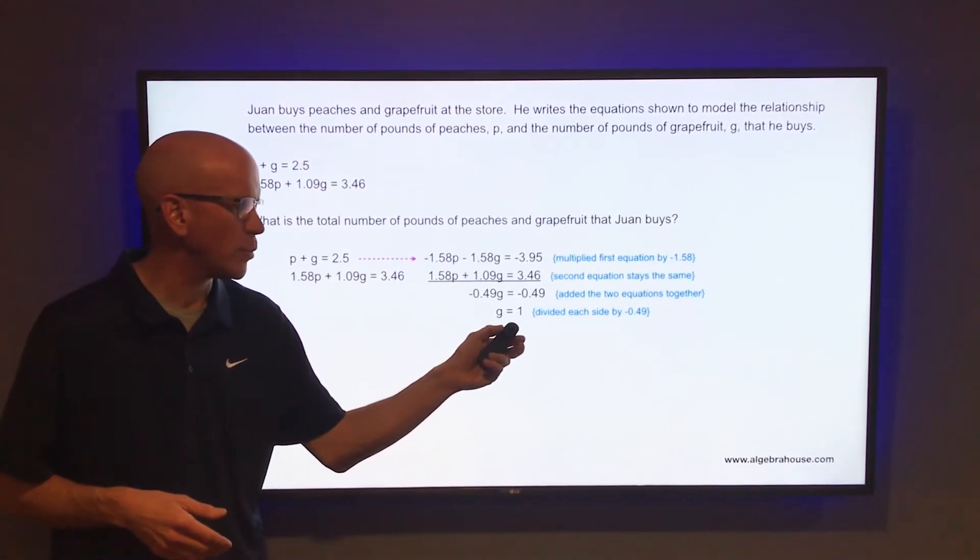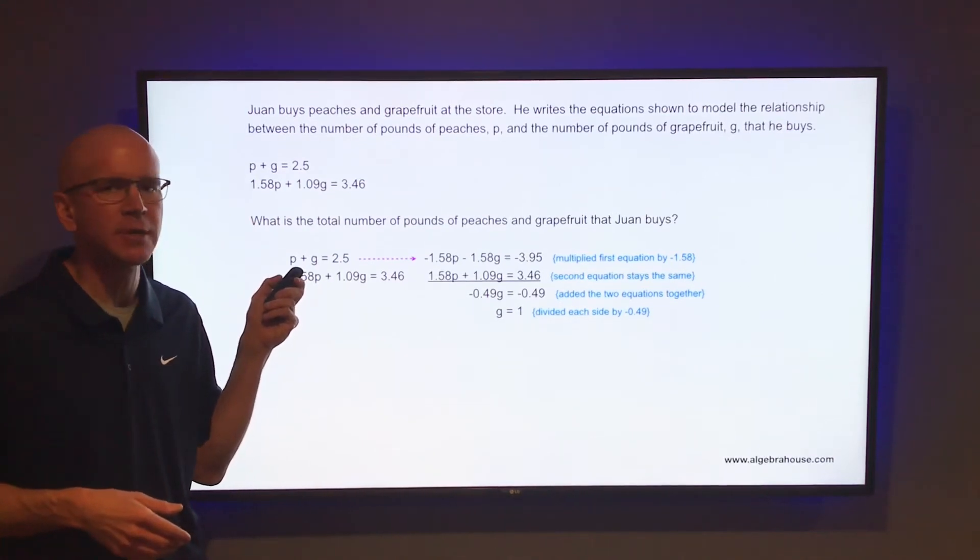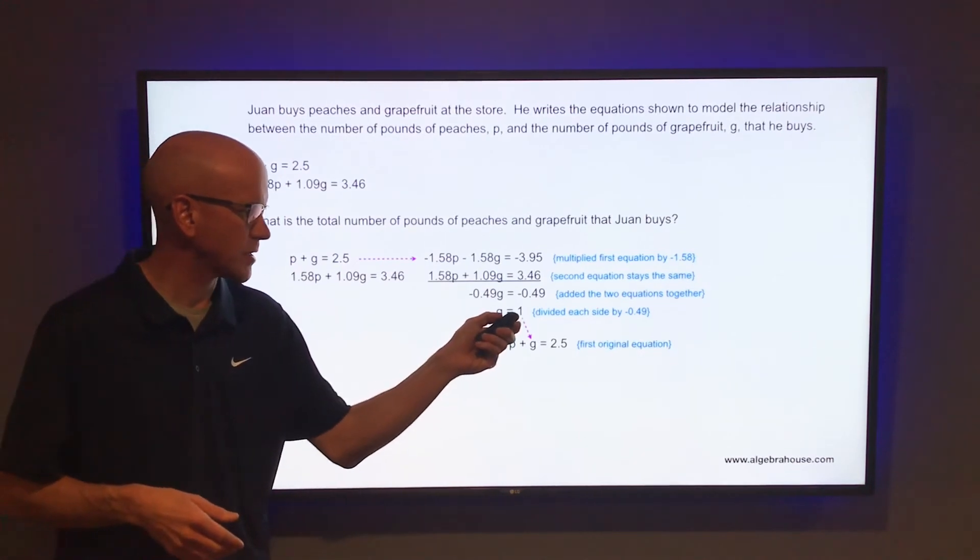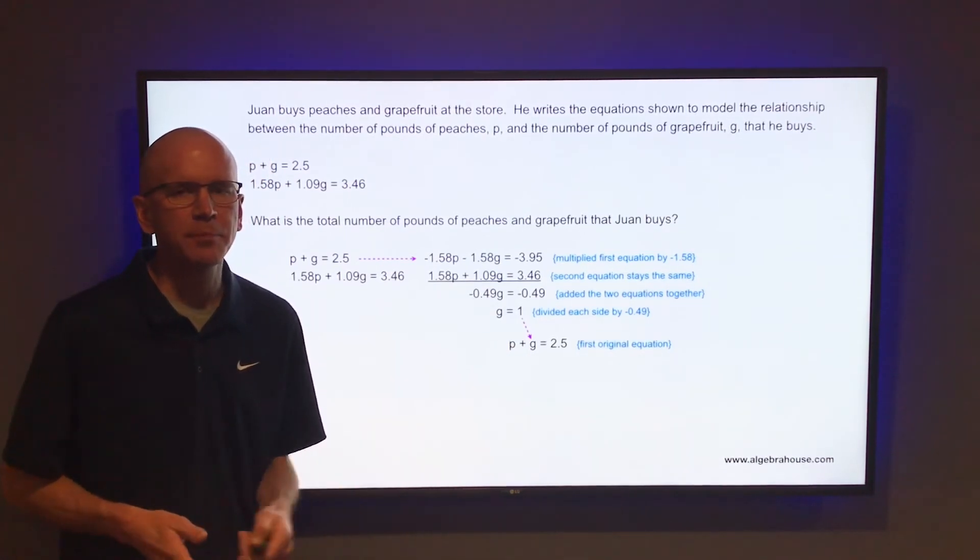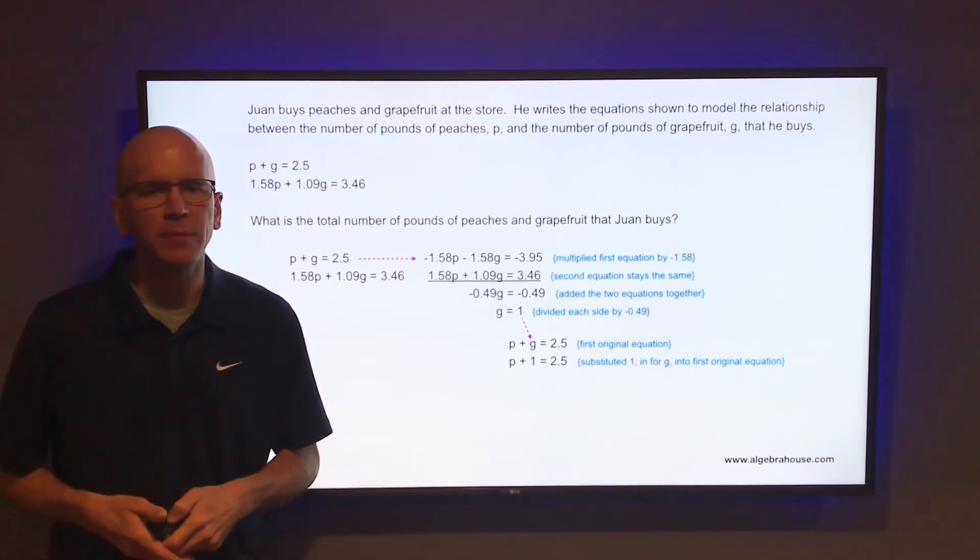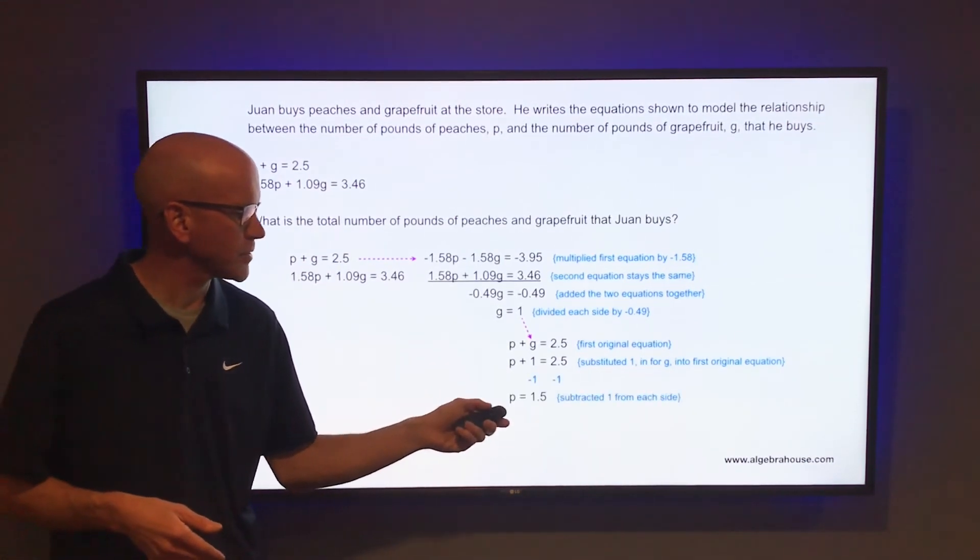Now that you know G is 1, you can go back to that first equation, substitute 1 in for G, and solve for P. Take that first equation, substitute 1 in for G, end up with P plus 1 equals 2.5. To solve that for P, subtract 1 from each side, get P equals 1.5.